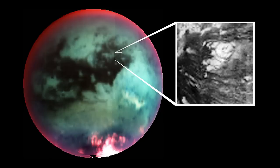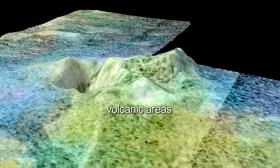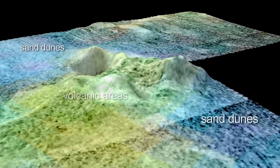Because Titan is so cold, evidence suggests that cryovolcanoes are the force reshaping Titan's surface.